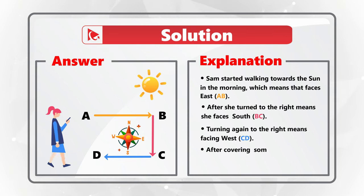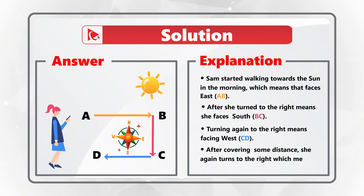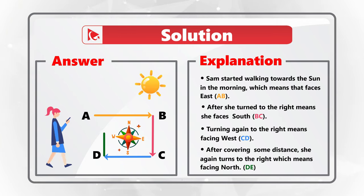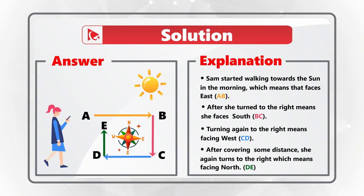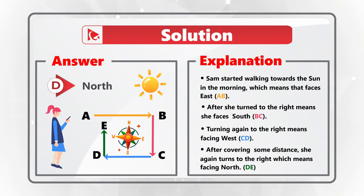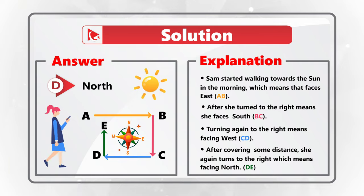And then last but not the least turn — after Sam covers more distance, she again turns to the right, which means she is now facing north, shown by ray DE. So the correct answer is choice D, north. Hopefully you've nailed this question and now know how to answer similar problems on the test.